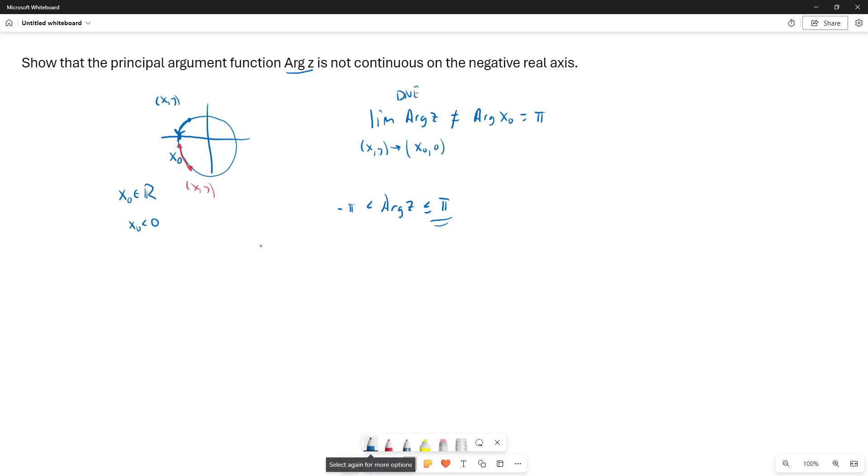So in the first case, the limit as (x,y) goes to (x0, 0), where we're taking x squared plus y squared equal to x0 squared, that's our circle, and we want y to be positive. So that describes our path, path one. We're on a circle centered at the origin with radius absolute value of x0, and we want the point (x,y) to have a positive y coordinate.